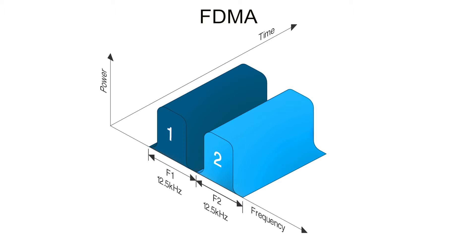Only one conversation, one user at a time, per radio channel. This technique is called frequency division multiple access. Multiple radio channels mean as many frequencies as our channels.